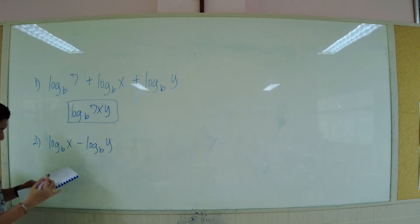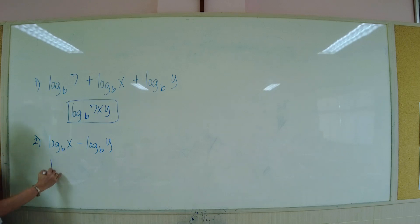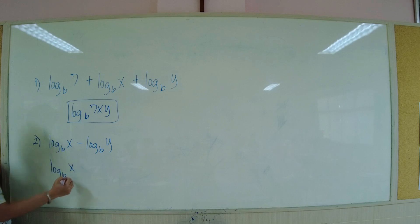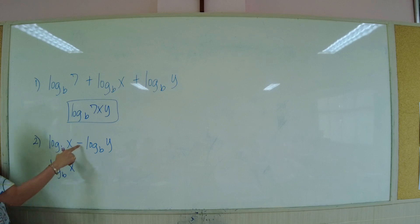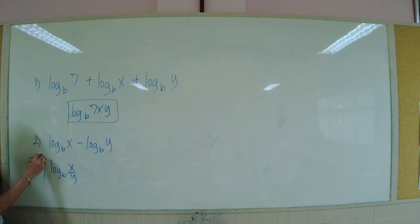Number 2: we have logarithm base b of x minus logarithm base b of y, so the answer is logarithm base b of x over y.